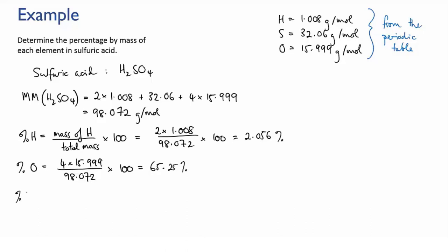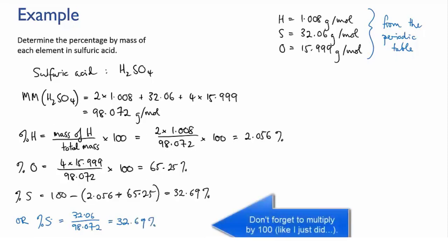Now we should be able to work out the percentage of sulfur by subtraction. We'll have 100 minus the sum of the other two percentages and that gives us 32.69%. And if we work out sulfur the full way we get the same answer which is great and our three percentages add up to 100%.